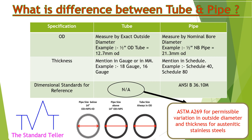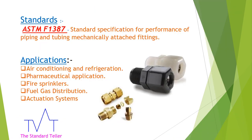Dimensional standards are not applicable for tubes, but we can refer to ASTM A269 for permissible variation in outside diameter and thickness for austenitic stainless steels. Whereas for pipe, dimensional standards such as ASME B36.10 apply. We will discuss these standards in detail in upcoming lectures.